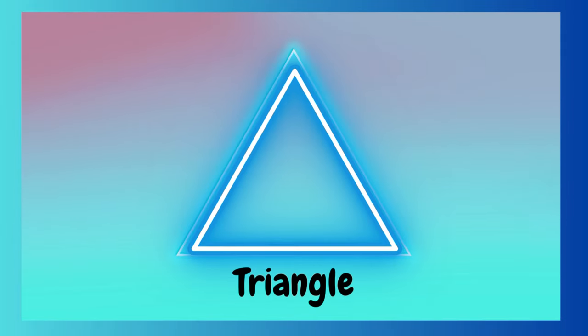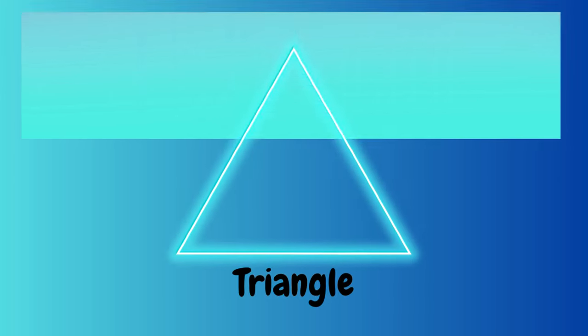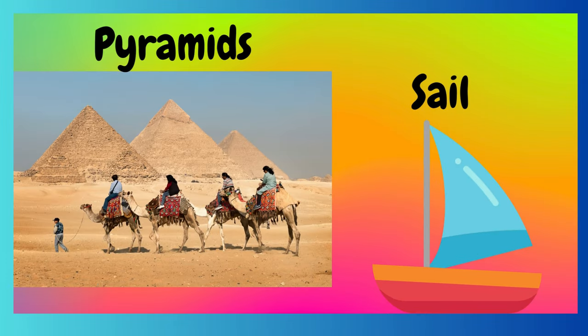This is a triangle. Can you say triangle? It has three points and three equal sides. Let's look at some examples of a triangle. Here we have pyramids. These are in Egypt. These pyramids have three equal sides and three equal points. And then we have a sailboat, and the sail on this boat is in the shape of a triangle.